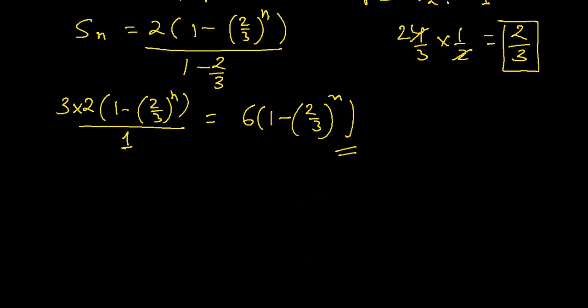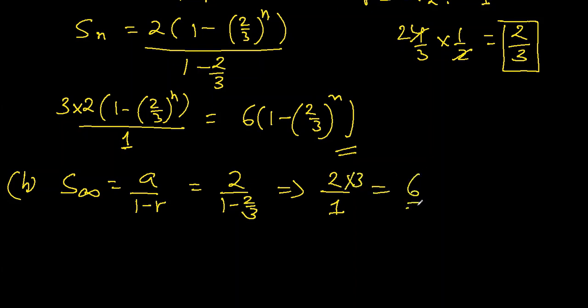Which will be again 2 divided by 1/3, so 6. So we have to find the number of terms when this 6 is more than the sum of first n terms by less than 1.